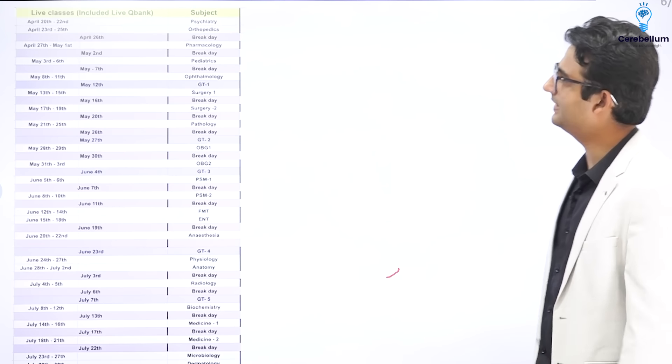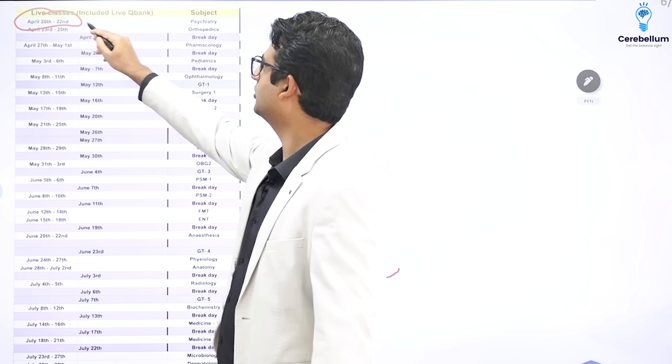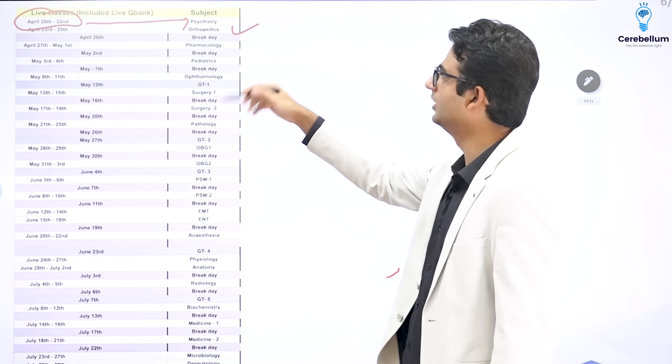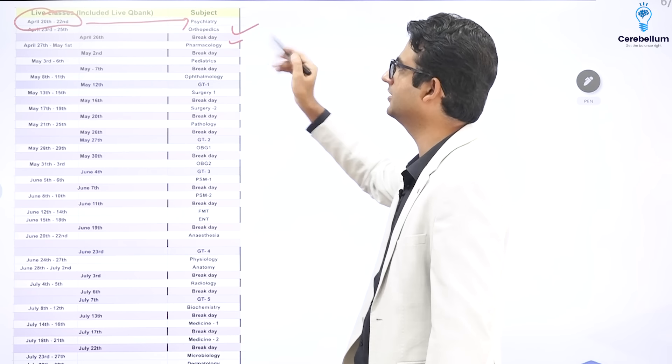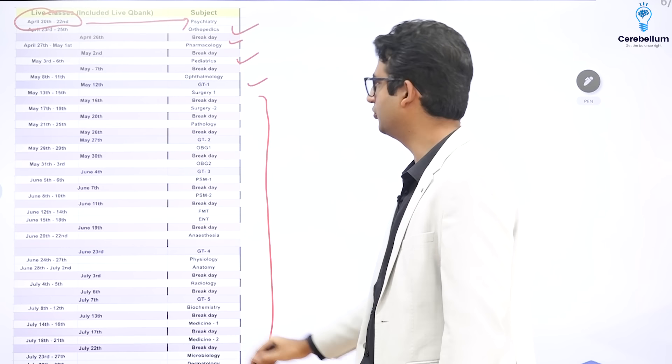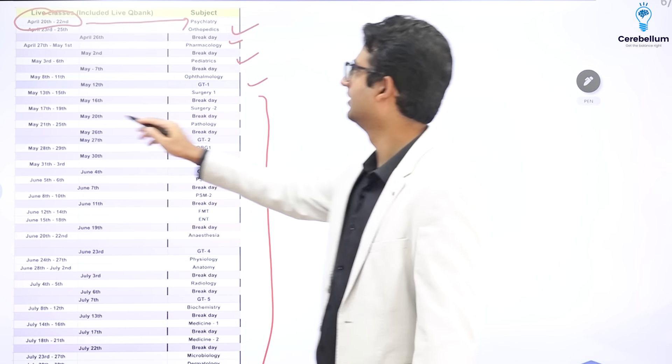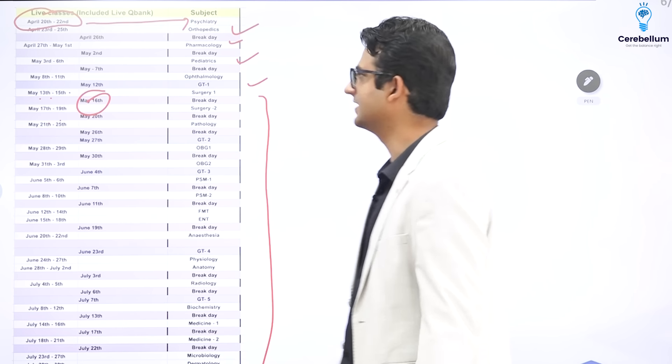Let me show you some details. So we are starting on April 20th. From April 20th to 22nd, psychiatry, then ortho, bigger subjects will get more days like for pharma 27, 28, 29, 30th, May 1st, paediatrics, ophthalmology and so on and so forth. So as you can see, for example, surgery, it is 13th, 14th, 15th, then a break day, 17th, 18th, 19th. So you get 6 days.